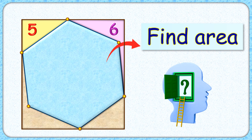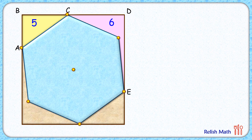In this interesting question, a rectangle is given with a regular hexagon inscribed in it. The yellow shaded region is 5 cm² and the brown shaded region is 6 cm². With this limited data, we have to find the area of the full hexagon. Let's check the solution.